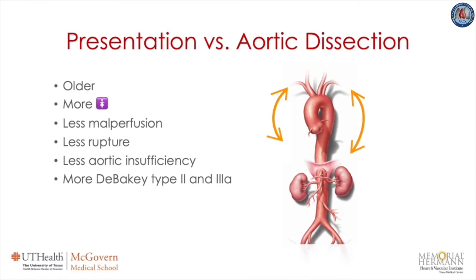Both aortic dissection and intramural hematoma patients can present with severe chest and back pain; however, IMH patients are older, more frequently female, and have less malperfusion including cerebral, spinal, visceral, renal, or limb malperfusions. They also have less rupture, less aortic insufficiency, and more DeBakey type 2 morphology.